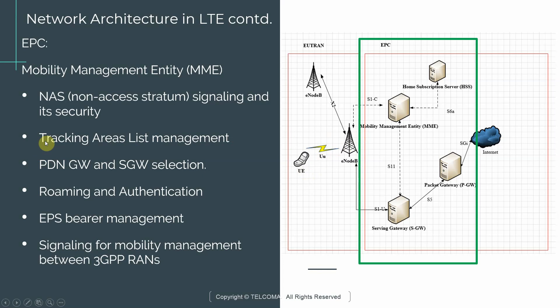Another key aspect the MME is involved in is tracking area list management. Tracking areas are zones that we typically define in our E-UTRAN. Say you are a network operator and you have 100 eNodeBs deployed. Those 100 eNodeBs — we show two here for simplicity, but you can have more.